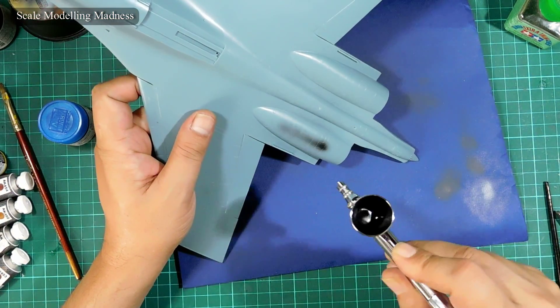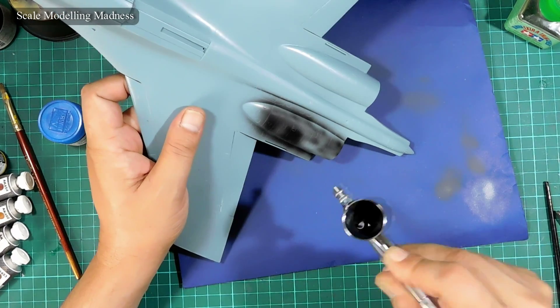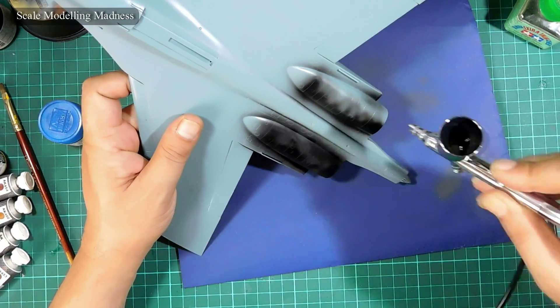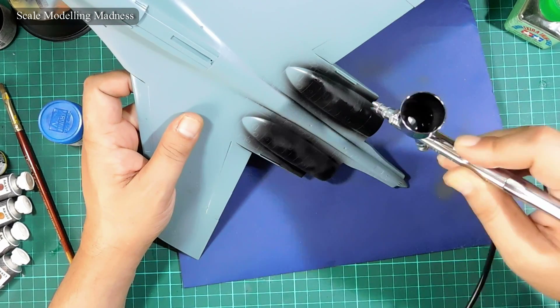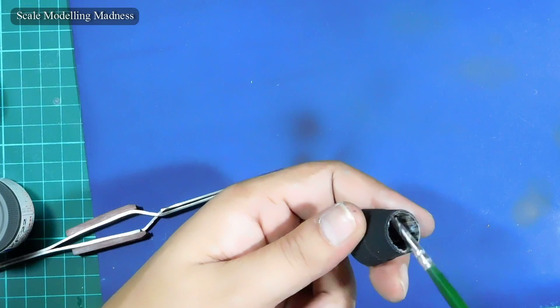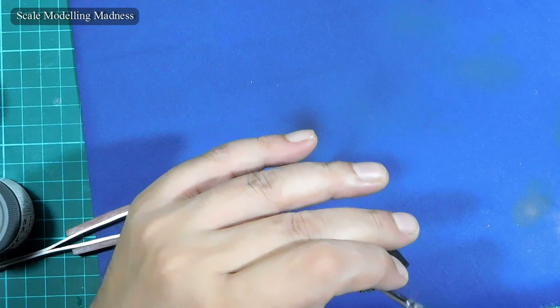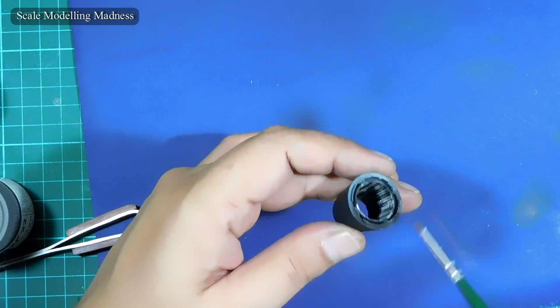To start with, I painted everything black. Next, I painted the inside of the exhausts by dry brushing some grey, white and brown on the inside.